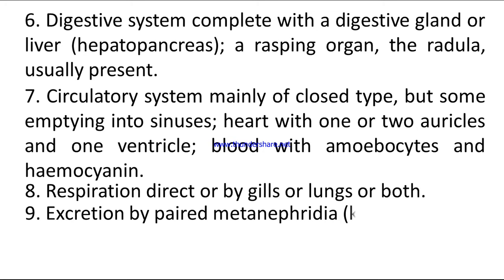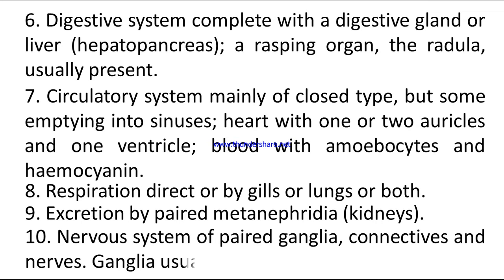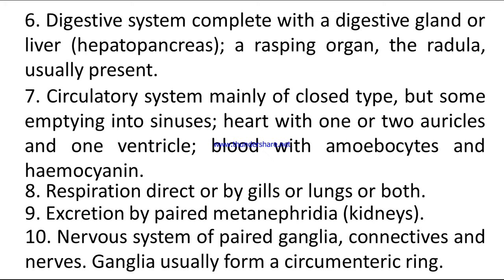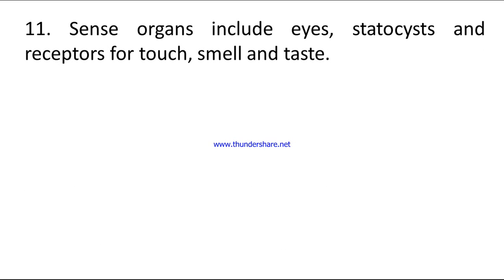Number nine — excretion by paired metanephridia (kidneys). Number ten — nervous system of paired ganglia, connectives, and nerves; ganglia usually form a circumoesophageal ring. Number eleven — sense organs include eyes, statocysts, and receptors for taste and smell.